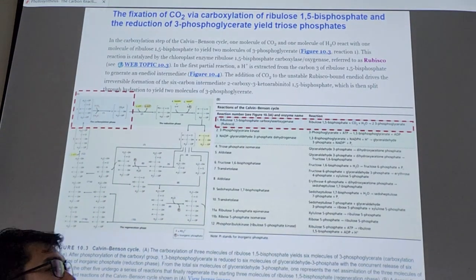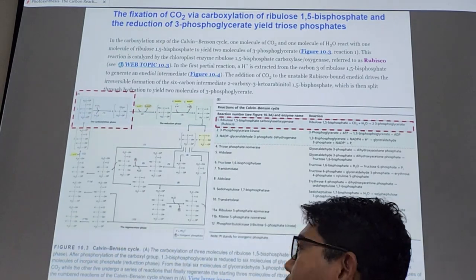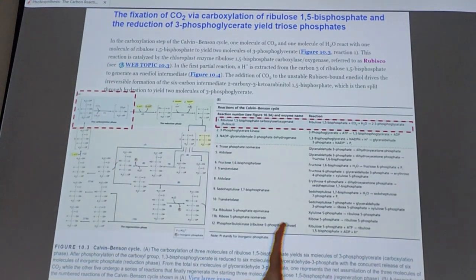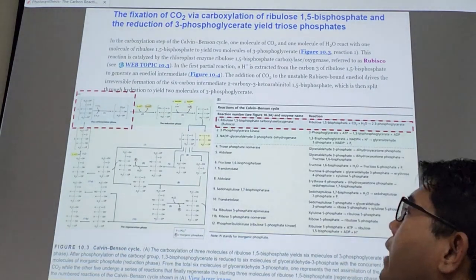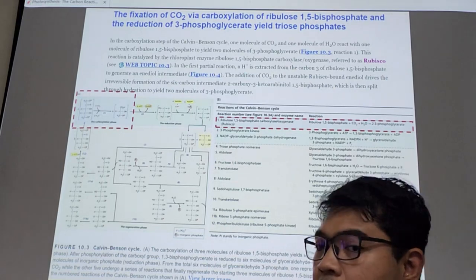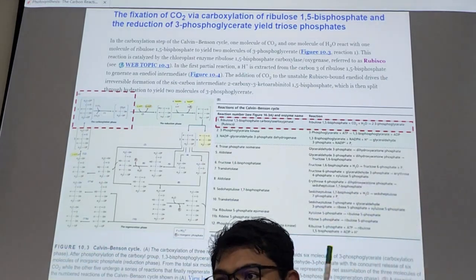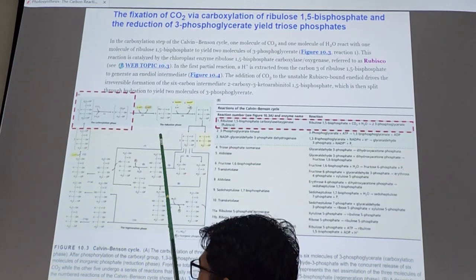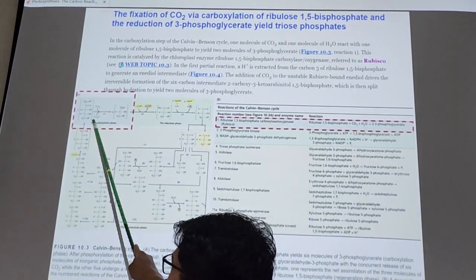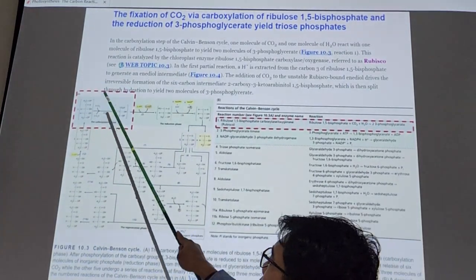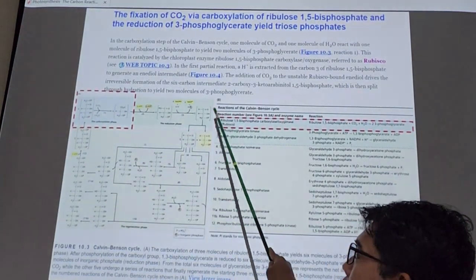These three phases of Calvin cycle, you have two ways to look at it. If you want to look at it in the form of chemical reactions, what chemical components reacting with what, you go with the left one. The carboxylation phase, reduction phase, and then regeneration phase. So you can see the complexity of it.